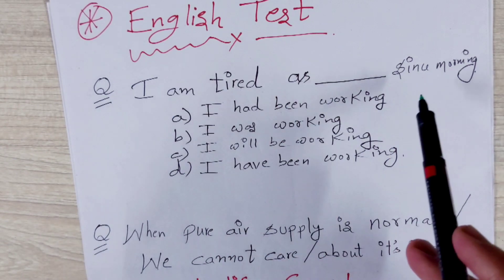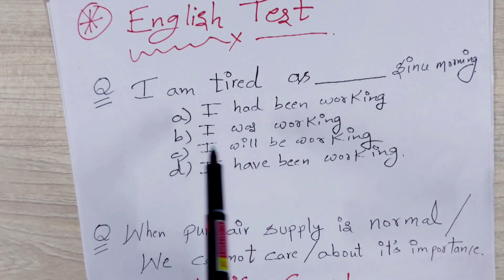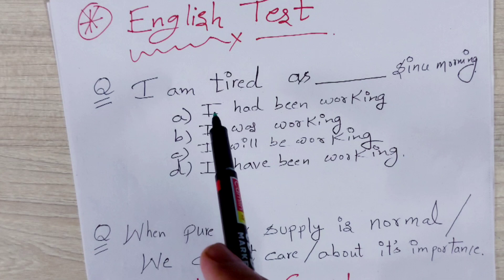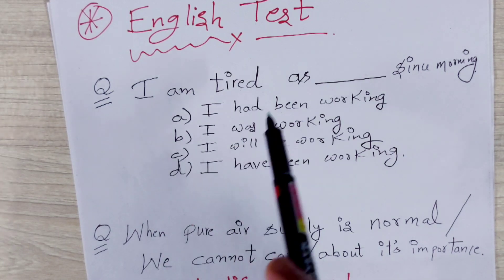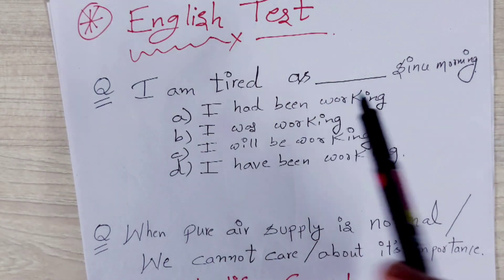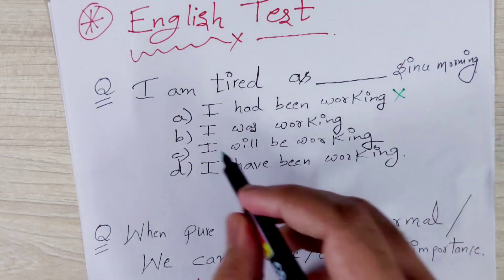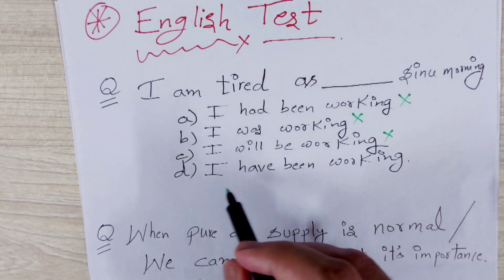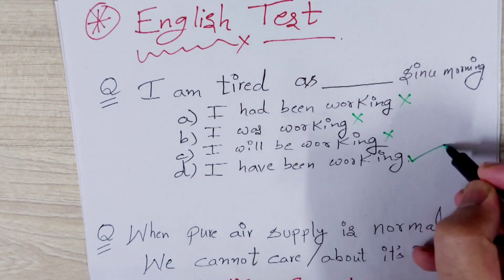I am tired as since morning. So four options are there. I had been working, was, will, have. So this is present. Like I am tired. He is tired now. So we will also use present tense here. So had been, past, canceled. Was, past, canceled. Will, future, canceled. Have been, present. Got it guys?